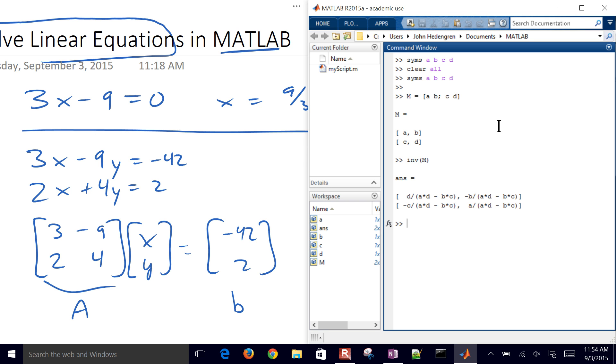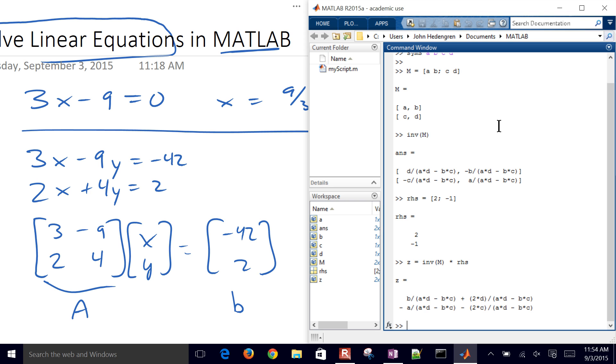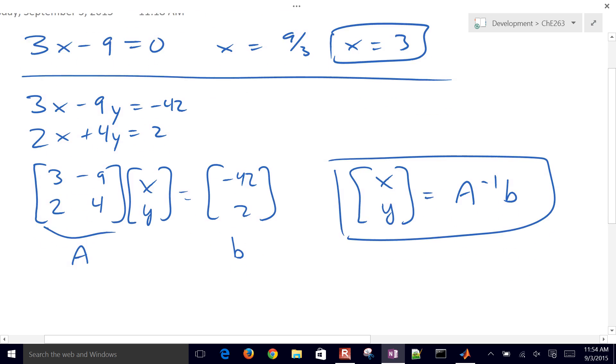So let's say I had the B vector equals, let's say, not B vector now. Let's just call it something else. I'll just call it the right-hand side equals 2 and negative 1. And then my solution Z then is going to be inverse of M times right-hand side. And then it shows it in symbolic form. So we can either do this in exact or symbolic form. Let's go ahead and try just another example in MATLAB, and I'll let you try it first.